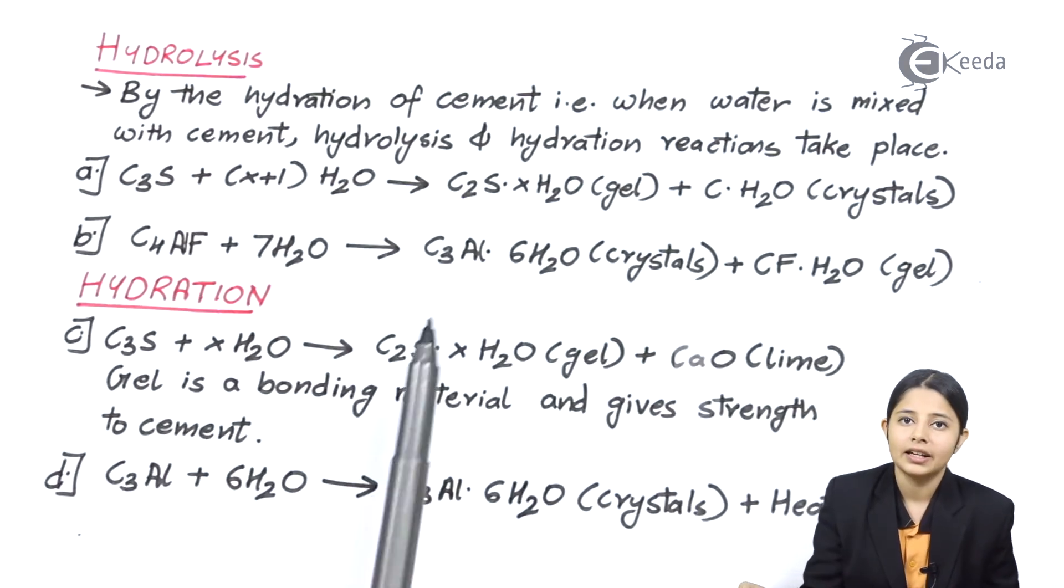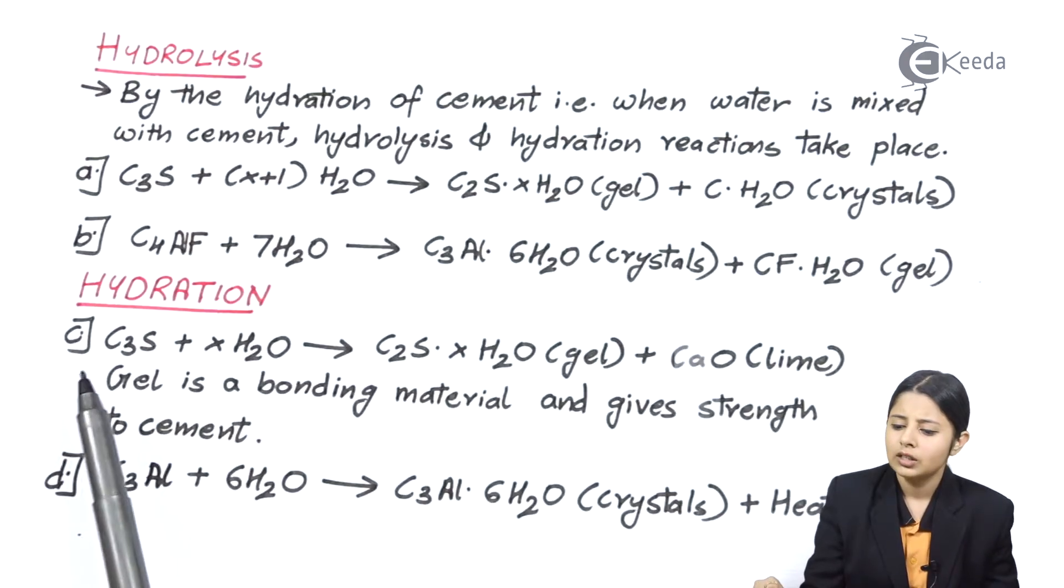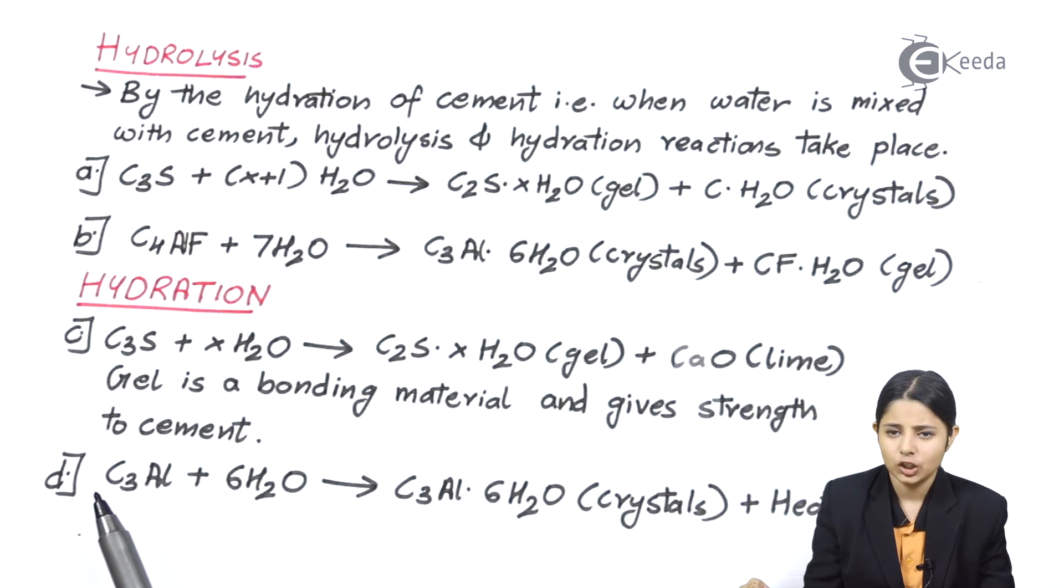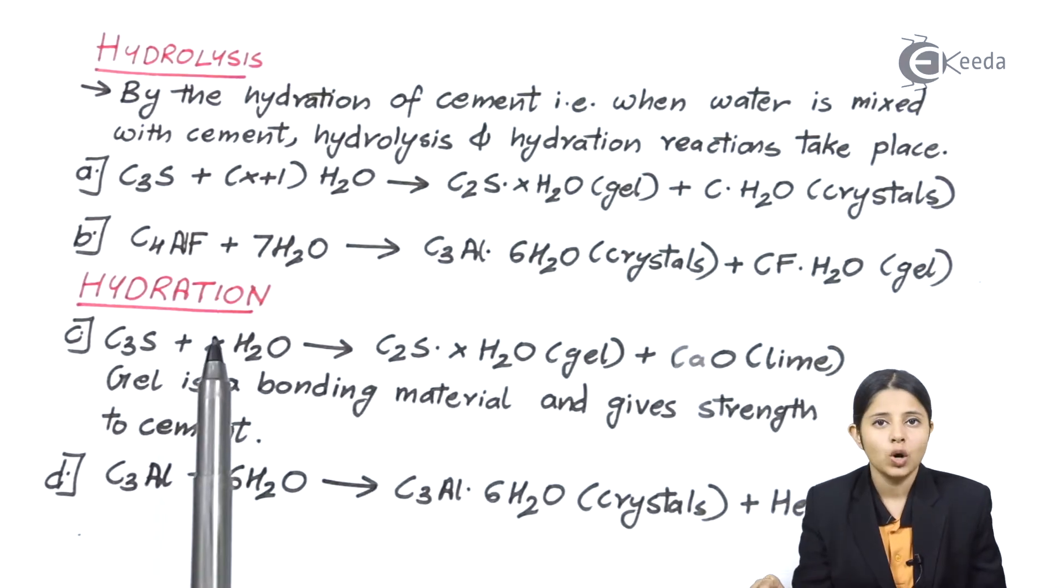Next we see hydration. Let's see what happens in hydration. We have another two reactions taking place in hydration. C3S plus XH2O. X is a variable because variable amount of water is added to it.